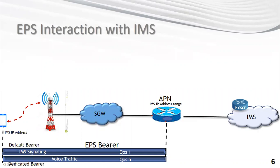Let's talk about the EPS interaction with the IMS. The IMS user, also called a VoLTE user, is a person provisioned on VoLTE, meaning they can make VoLTE calls or Voice over LTE calls without falling back to the CS network. This VoLTE person will normally be roaming on an LTE or 4G site, accessing the IMS network through the LTE network.